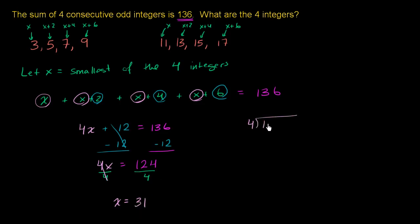And if you don't feel like doing that in your head, you could also do traditional long division. 4 goes into 124, 4 doesn't go into 1, 4 goes into 12 three times, 3 times 4 is 12, you subtract, bring down the next 4, 4 goes into 4 one time, you get no remainder. So x is equal to 31.